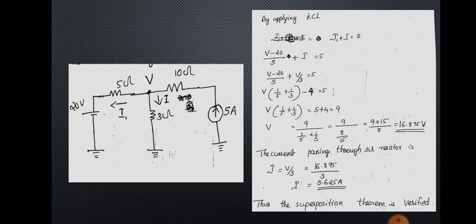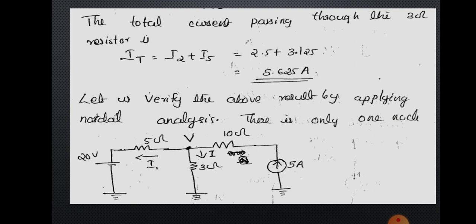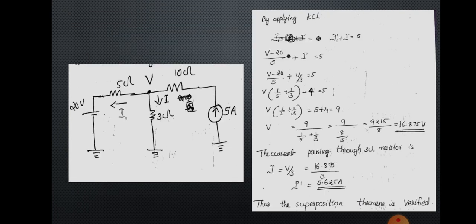i1 = (V − 20) / 5 and i = V / 3, giving (V − 20)/5 + V/3 = 5. Solving, V = 16.875 volts. The current through the 3 ohm resistor = V / 3 = 16.875 / 3 = 5.625 ampere. By nodal analysis we get 5.625 ampere and by superposition principle also 5.625 ampere — both are equal, so the result of superposition theorem is verified.